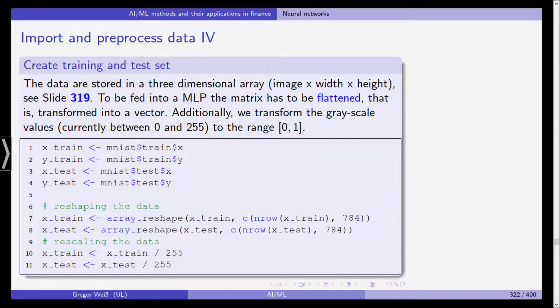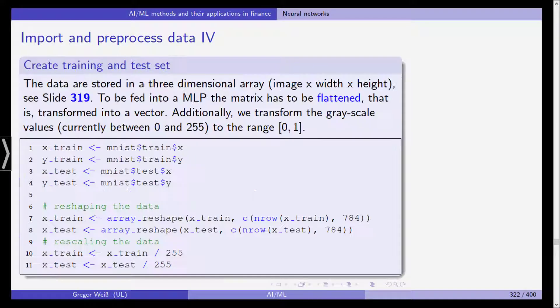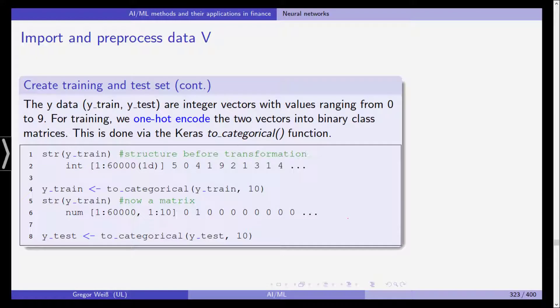To be fed into a multilayer perceptron, this matrix has to be flattened. That is, it needs to be transformed into a vector. Additionally, we need to transform the grayscale values between 0 and 255 to the range between 0 and 1. We need to reshape the data by flattening it and then we rescale this by dividing all the numbers by 255. If you divide everything by 255, this whole range from 0 to 255 is transformed to the interval from 0 to 1.